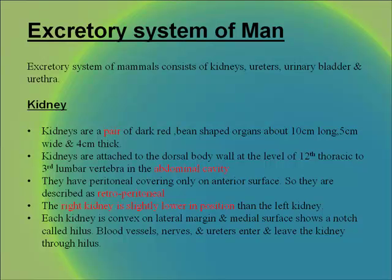The excretory system of mammals consists of kidneys, ureters, urinary bladder and urethra. Kidneys are a pair of dark red bean-shaped organs about 10 cm long, 5 cm wide and 4 cm thick. They are attached to the dorsal body wall at the level of the 12th thoracic to the 3rd lumbar vertebra in the abdominal cavity, with peritoneal covering only on the anterior surface; they are described as retroperitoneal. The right kidney is slightly lower in position than the left kidney.